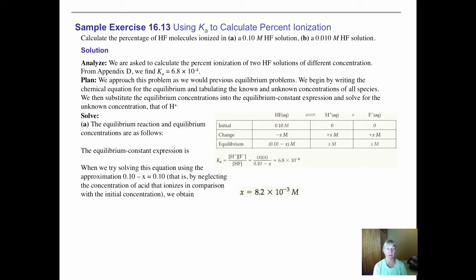If you solve this equation by ignoring the X, and you go to appendix D and get Ka = 6.8 × 10⁻⁴, you can quickly solve that X, the final concentration of hydrogen ion, is equal to 8.2 × 10⁻³.